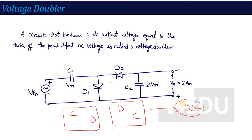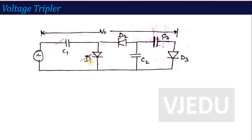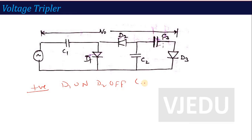The Voltage Doubler circuit consists of a CD and DC combination. If we want to make a Tripler circuit from the Doubler, just add one more capacitor-with-diode combination ahead of it. With this additional combination connected, it becomes a Tripler circuit. The working is exactly the same as the Doubler up to its stage: during the positive half cycle, D1 is on, D2 is off, and C1 charges to VM. During the negative half cycle, C2 charges to 2VM.